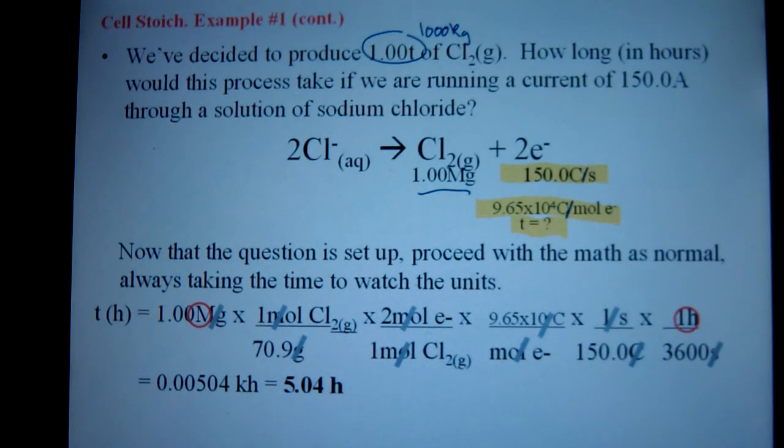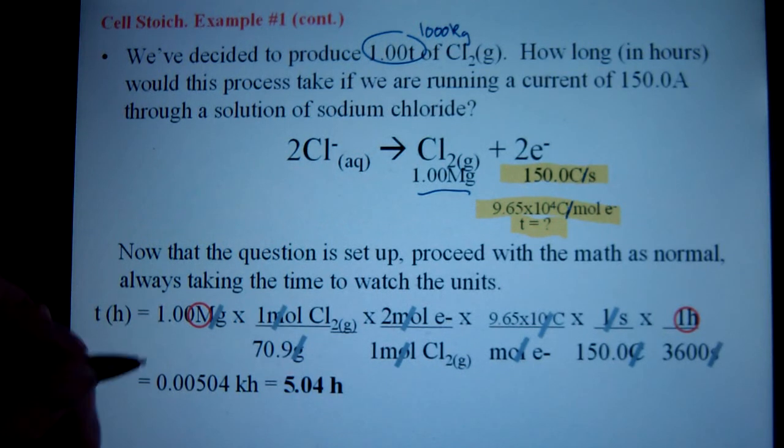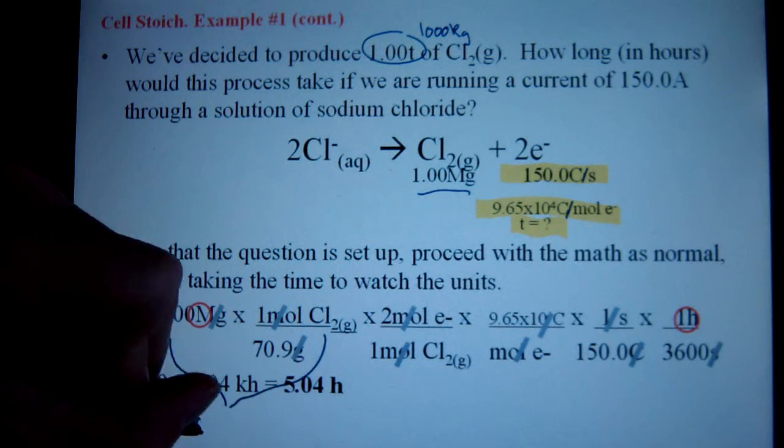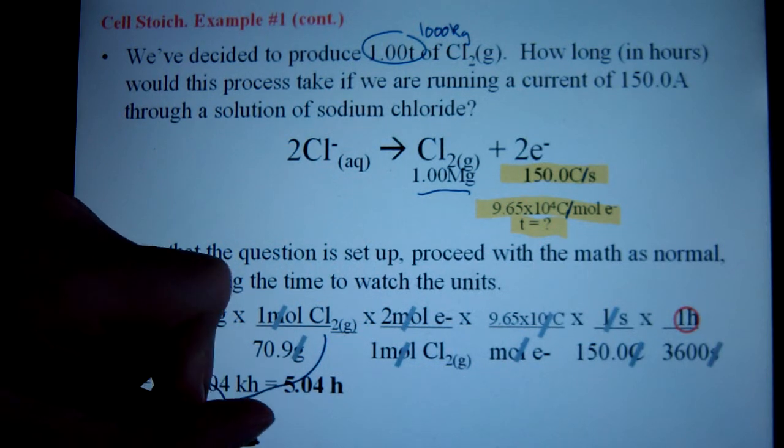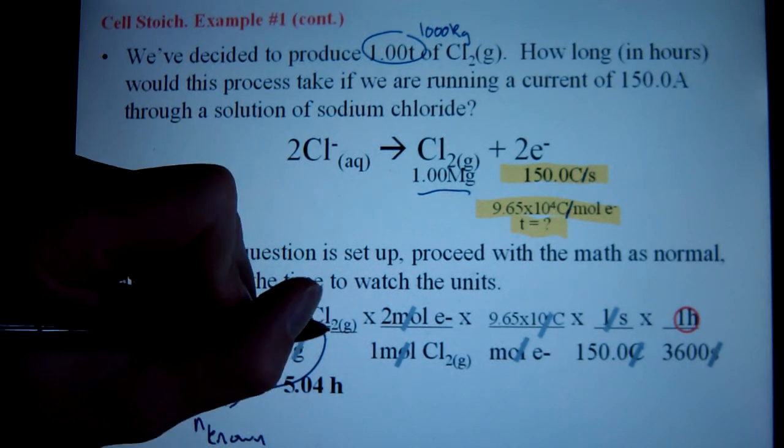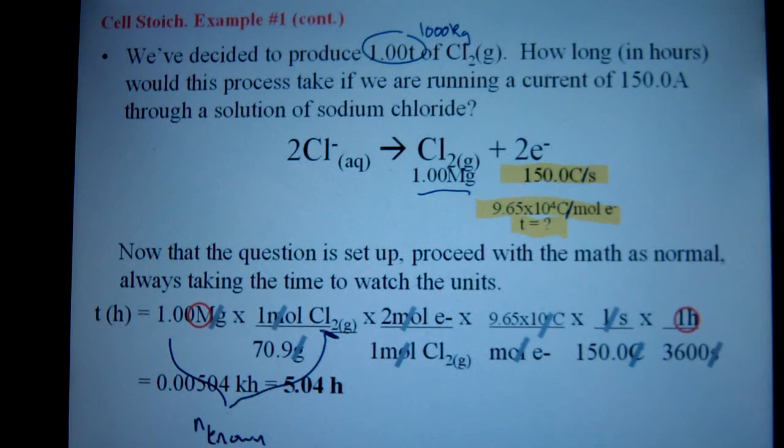So, what do we do after we have everything written out? Normal stoichiometry starts. First step, let's find the moles of our known substance. So, that's what I've done here. I've converted the megagram into moles of chlorine gas just using the molar mass. Okay, watch. You know, it's Cl2. So, the molar mass was doubled.